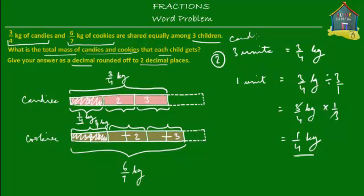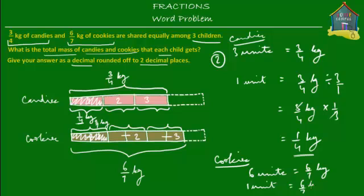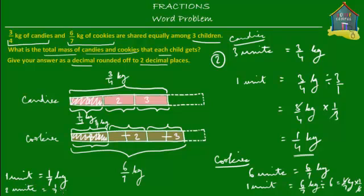How about cookies using the unit method? Cookies is six units — one, two, three, four, five, six. So six units are equal to six-sevenths of a kilogram. Then one unit equals six-sevenths divided by six, which is six-sevenths multiplied by one-sixth. The sixes cancel out, so one unit is equal to one-seventh of a kilogram. But the share of each child is two units, so two units equals one-seventh multiplied by two, which is two-sevenths of a kilogram. Each child gets two-sevenths of a kilogram — the same as from the first method.